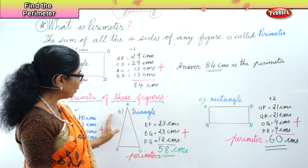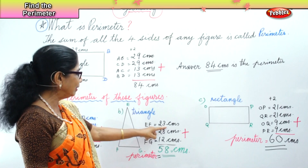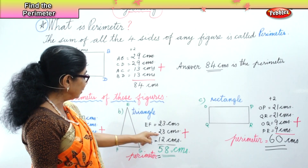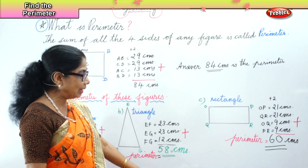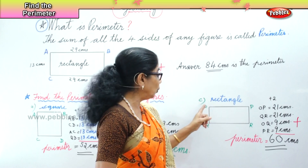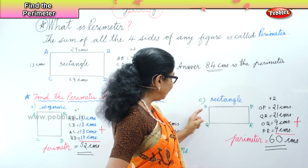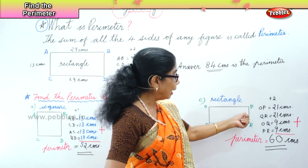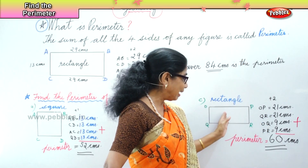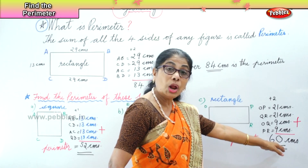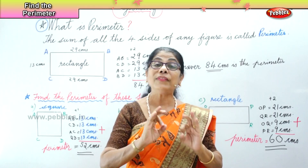Now we look at the triangle: to find the perimeter, add up all three sides. EF is 23 centimetres, EG is 23 centimetres, FG is 12 centimetres — the perimeter of the triangle is 58 centimetres. Finally, the rectangle: opposite sides are equal. OP is 21 centimetres, QR is 21 centimetres, OQ is 9 centimetres, PR is 9 centimetres. When we add all four sides we get 60 centimetres — the perimeter of the rectangle. So the perimeter is the sum of all sides of any figure.